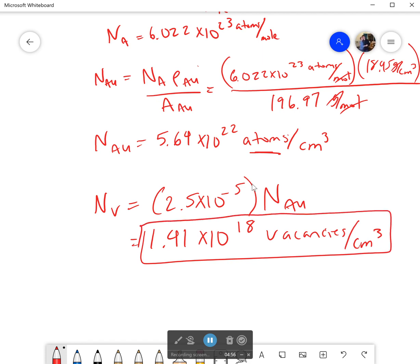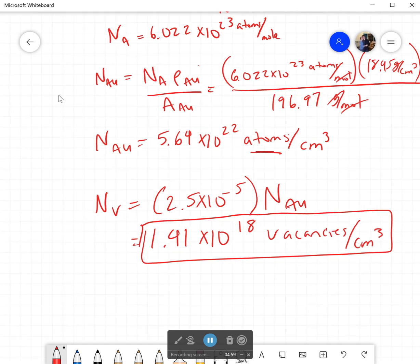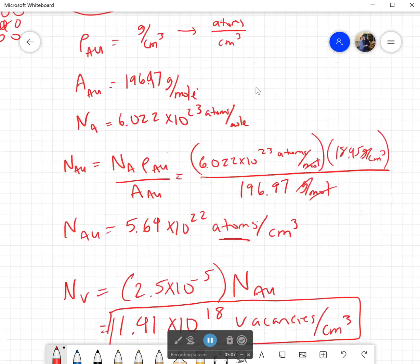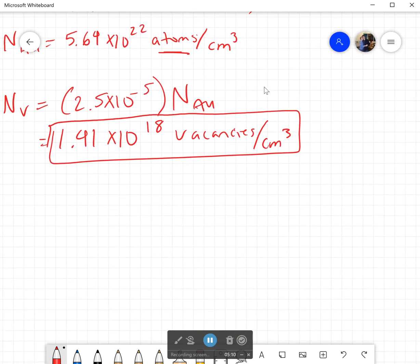However you'd be wrong because I didn't ask for vacancies per centimeter cubed, I asked for per meter cubed. So we've got to convert that. Now how do we convert from centimeter cubed to meters cubed?